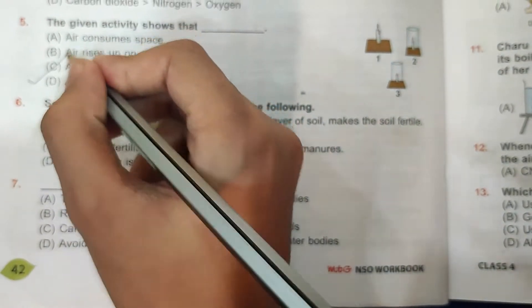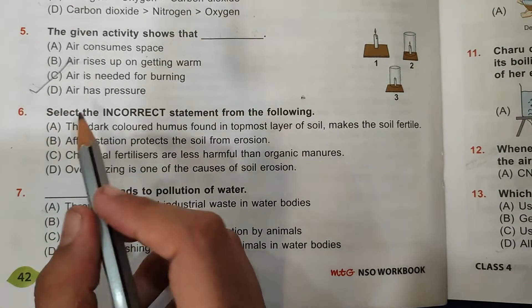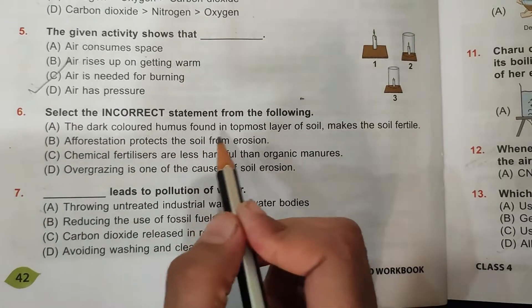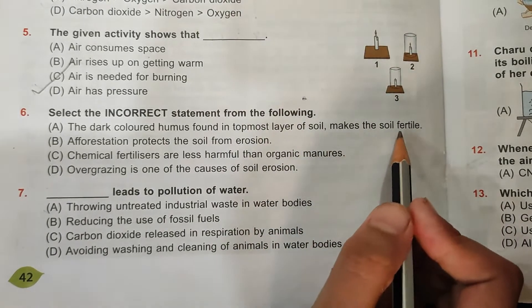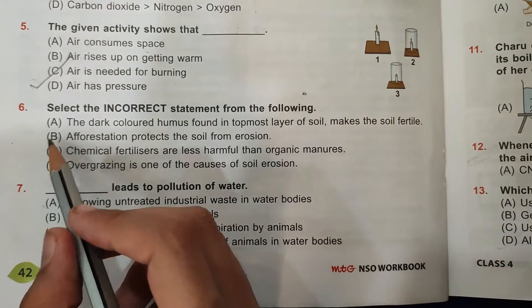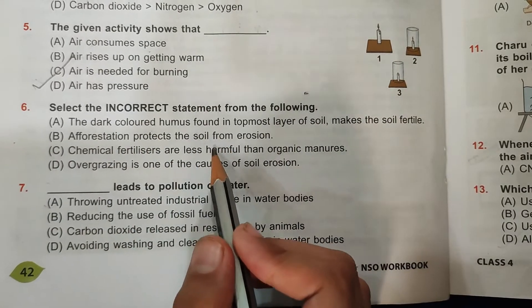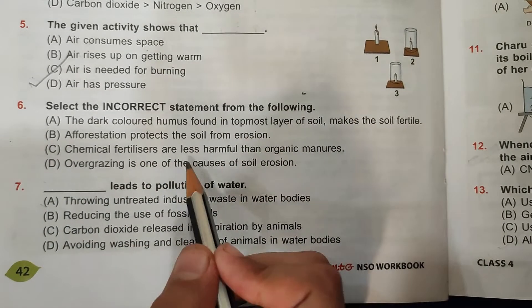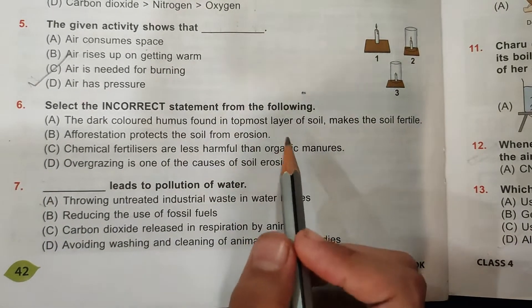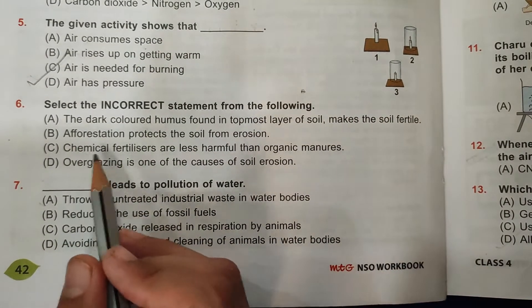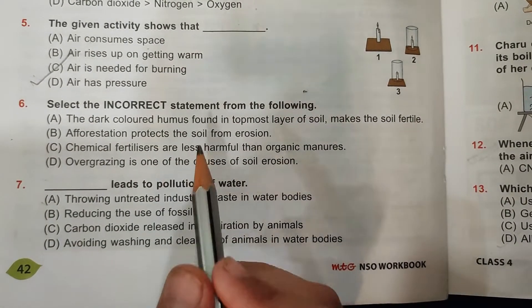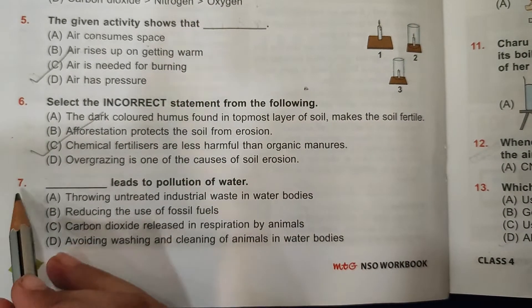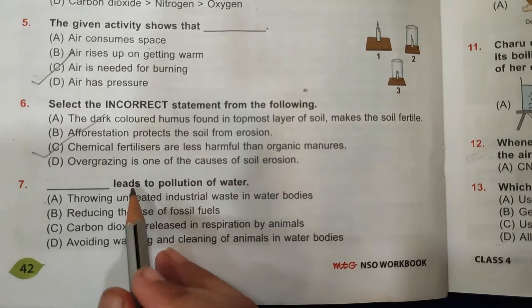Fifth question: The given activity shows that air is needed for burning, so C is the correct answer. Then sixth question: Select the incorrect statement from the following. A: The dark colored humus found in topmost layer of soil makes the soil fertile - yes. B: Afforestation protects the soil from erosion - yes. C: Chemical fertilizers are less harmful than organic manures - that is incorrect.